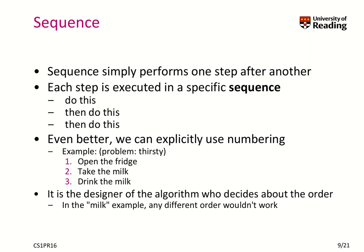Let's start with sequence. Sequence simply performs one step after another — each step is executed in a specific sequence. We say something like: do this, then do that, then do this — in exactly this order. Here's a very simple example for solving the problem of being thirsty: firstly, you open the fridge, then you take the milk, and finally you drink the milk. Any other order doesn't make sense. You cannot drink the milk without opening the fridge and taking the milk. So the order really matters, and it is typically described by the designer of the algorithm.